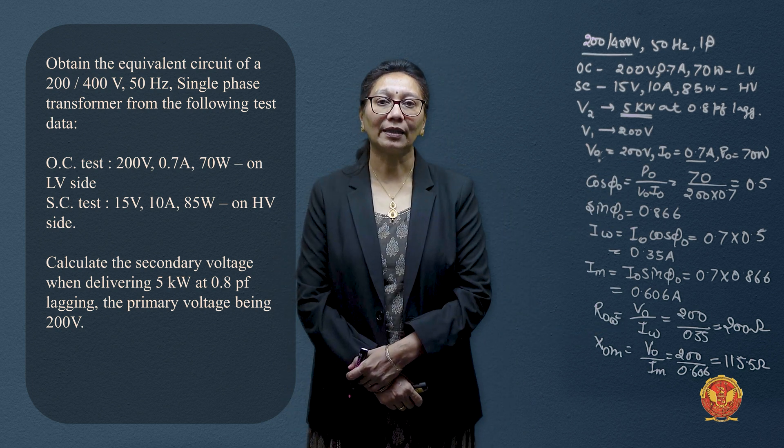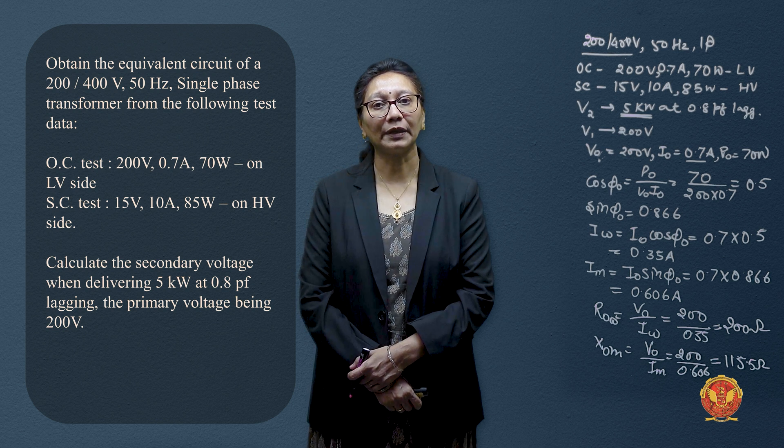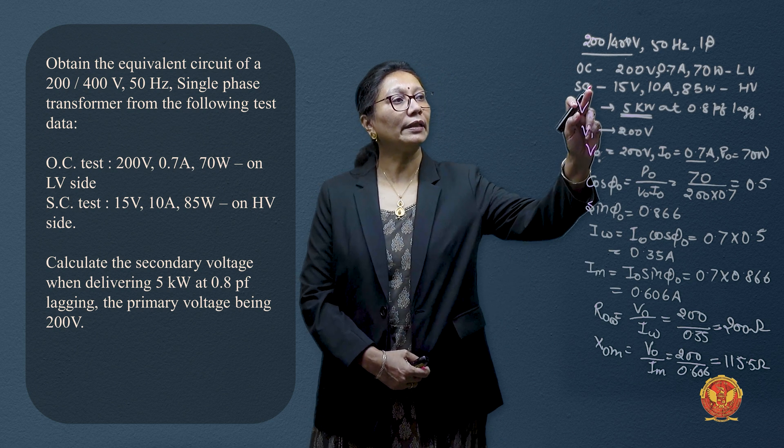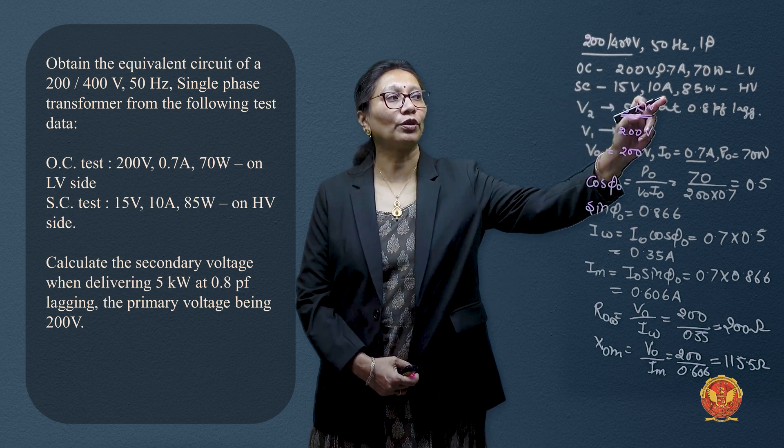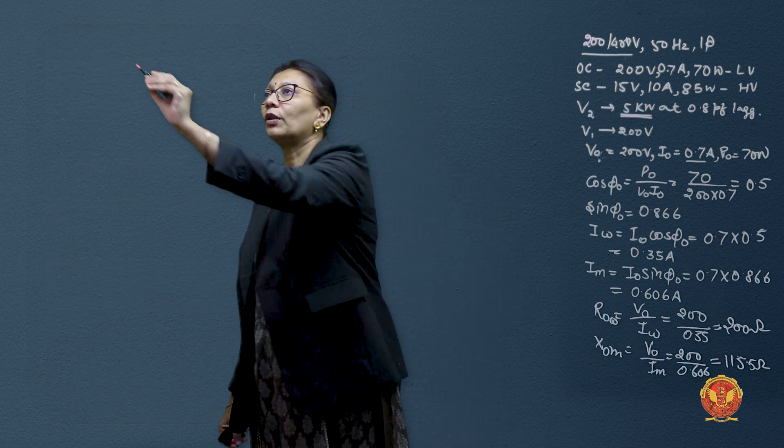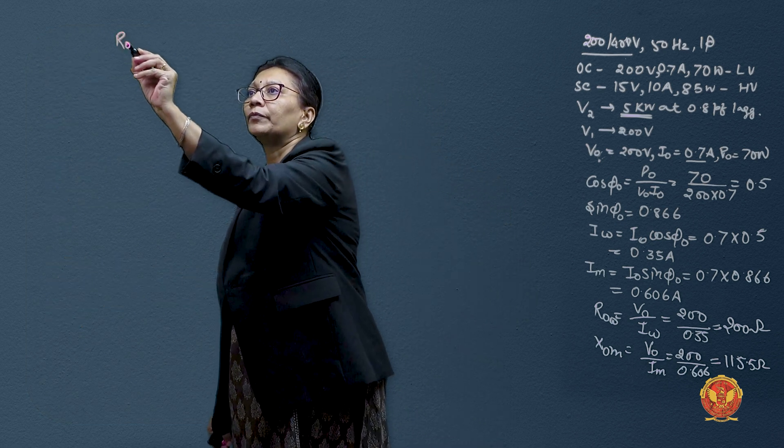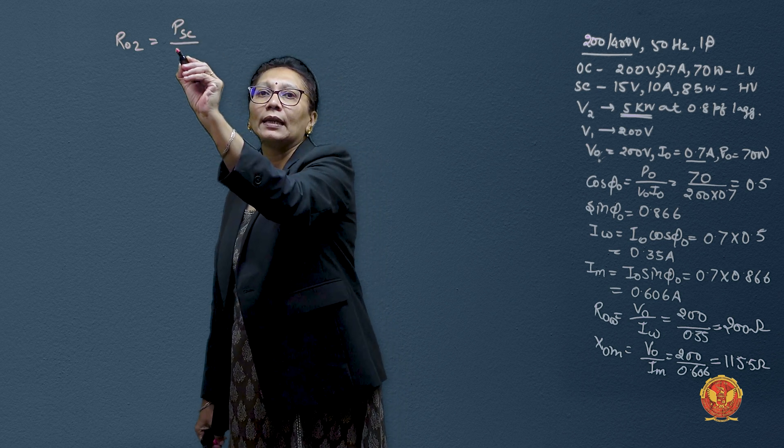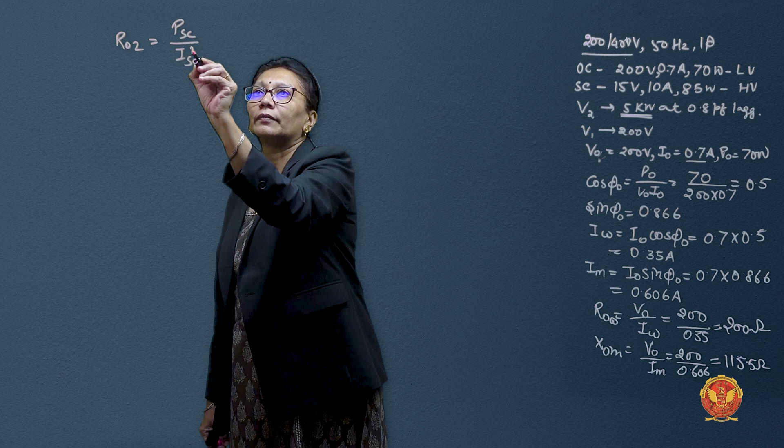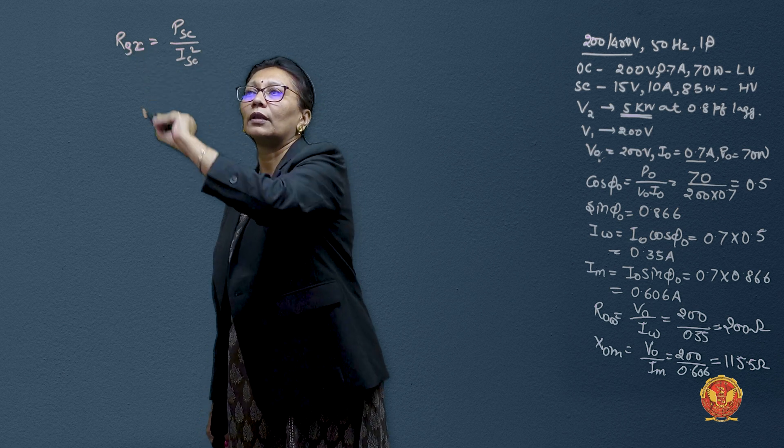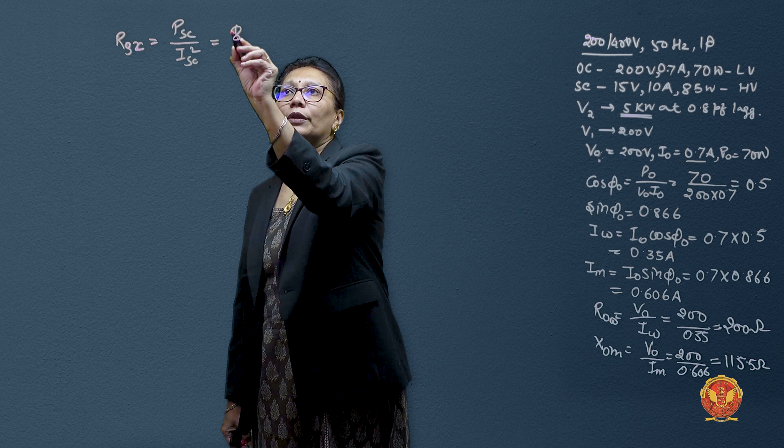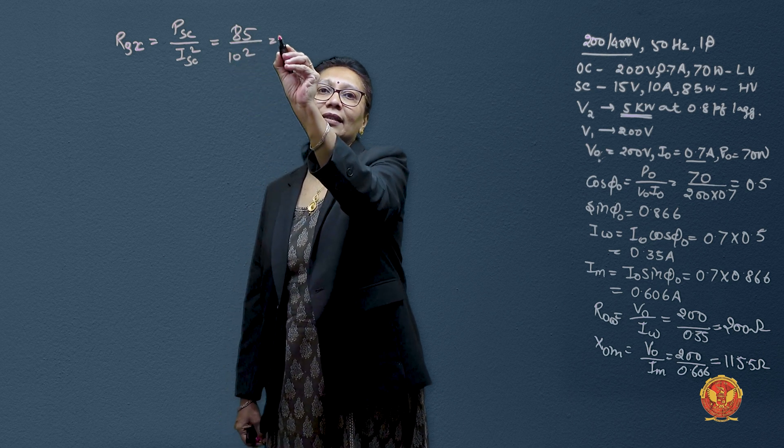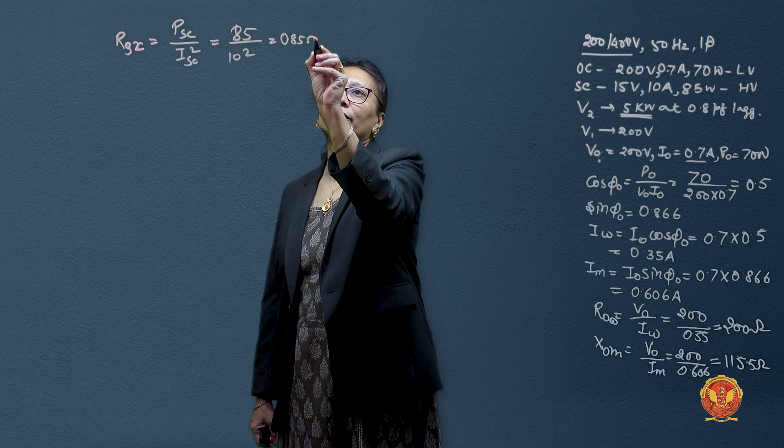Now we will remove the components from the primary and secondary winding resistance and reactances. We have the readings for short circuit test as 15 volt, 10 ampere and 85 watts. Let's start with R. Secondary side referred resistance would be PSC divided by ISC square. So it would be 85 divided by 10 square. This gives us 0.85 ohms.